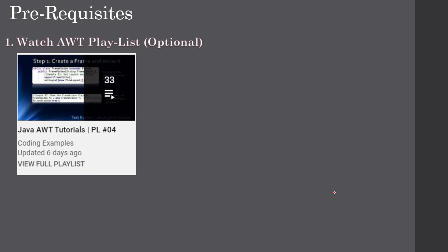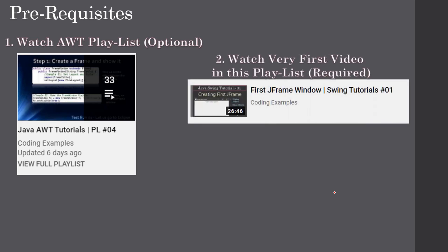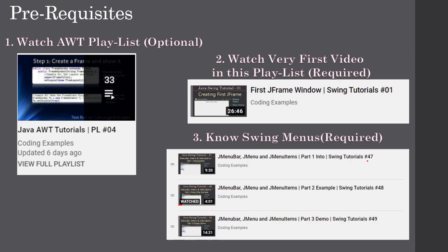Watching the prerequisite playlist is optional but doing so will help you learn this Swing series easier. This video assumes that you know how to create a frame window, which was discussed in the very first video of the Swing series, and how to create menus, covered across three videos on theory, example, and Eclipse demo. Since you have that knowledge, we will dig into creating the JMenuItem with image icons.